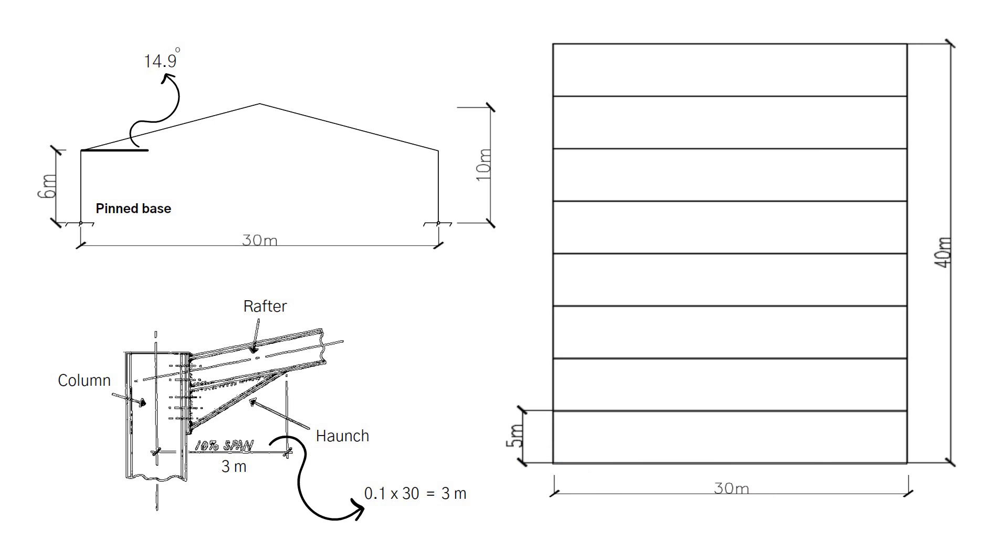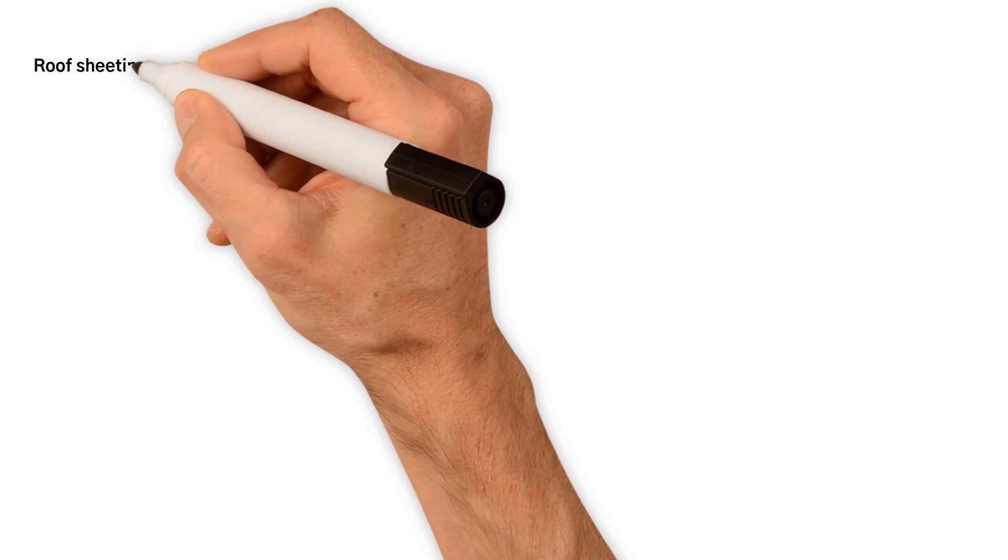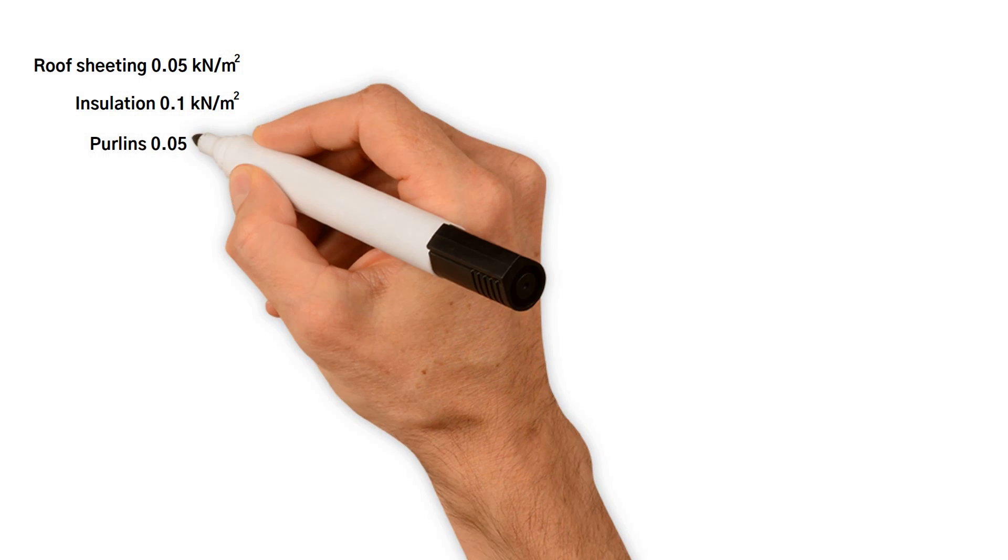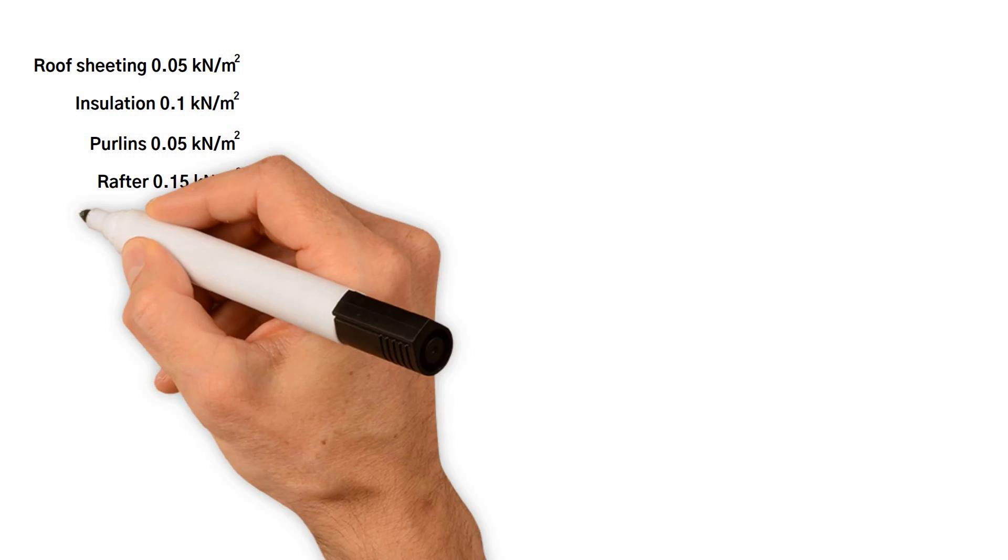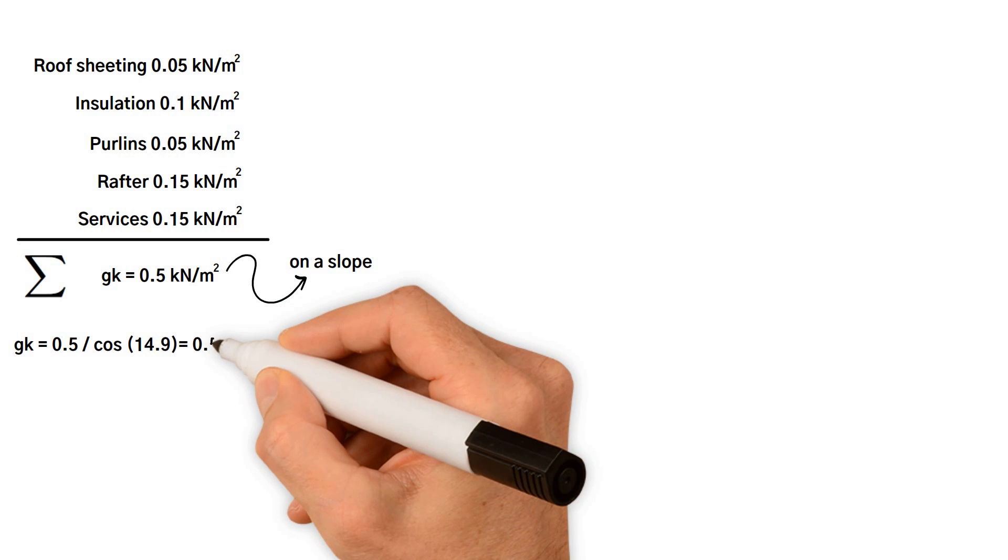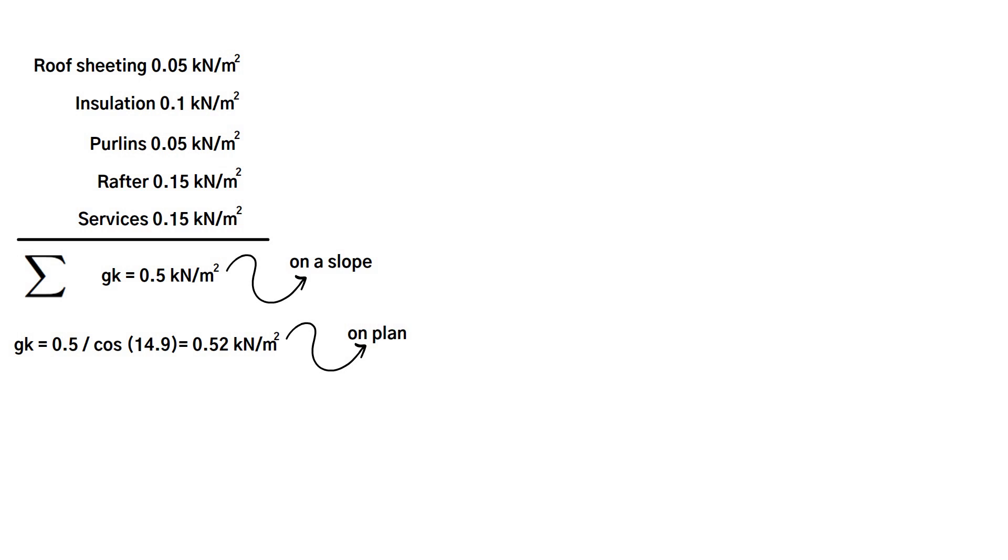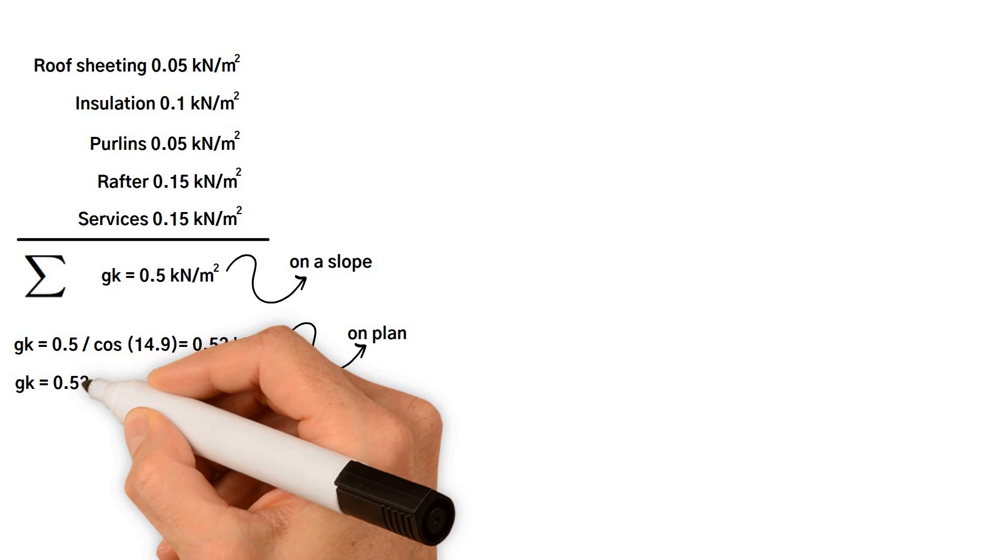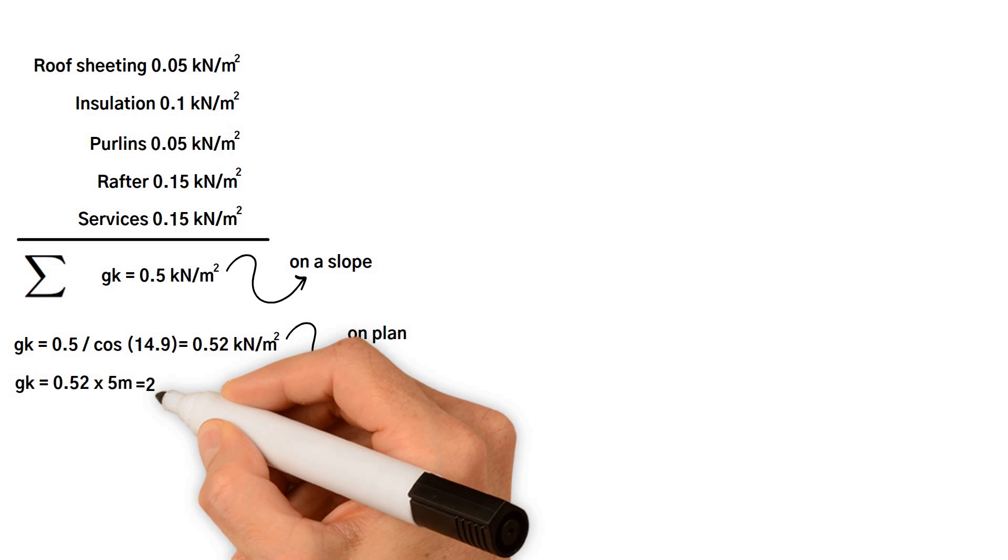The following loads have been selected for the analysis. Roof sheeting 0.05 kilonewtons per meter squared, insulation 0.1, purlins 0.05, rafter 0.15, services 0.15 kilonewtons per meter squared. Therefore, total dead load equals 0.5 kilonewtons per meter squared. These dead loads have been measured on a slope. So, load on plan equals 0.5 divided by cosine 14.9, which equals 0.52 kilonewtons per meter squared. As the spacing of portal frame equals 5 meters, hence, dead load on roof equals 0.52 times 5 meters, which equals 2.6 kilonewtons per meter.